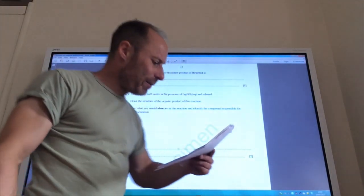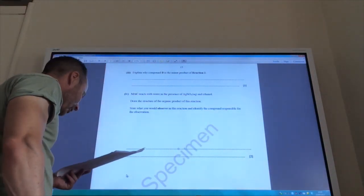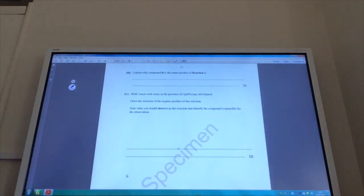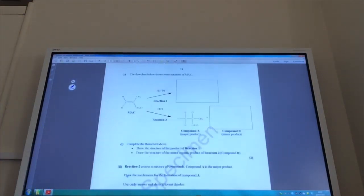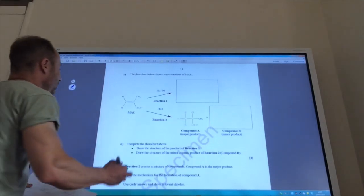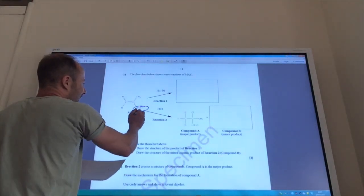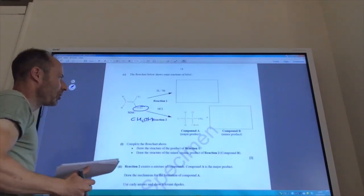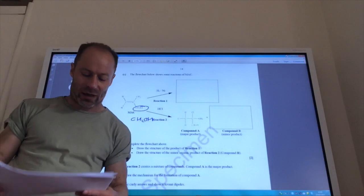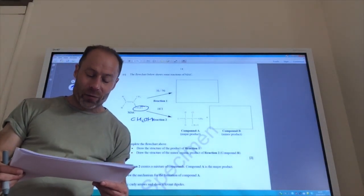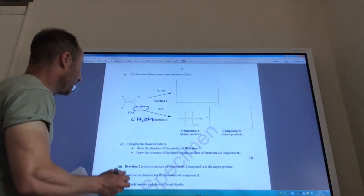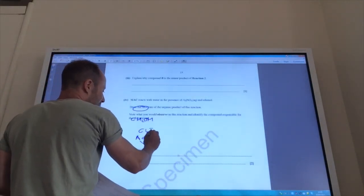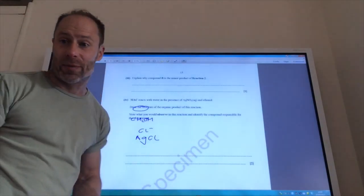Mach reacts with water, in the presence of silver nitrate and ethanol, to give the structure of the product. Well, what will happen is that I will lose, if we just whizz back to Mach, there we go, this won't be affected by it, but this CH2 will become CH2OH. I'll have a nucleophilic substitution reaction from there. What would I observe? Well, if I've got silver nitrate, this chloride ion comes off like that, so I'll form silver chloride, so I will see a white precipitate.